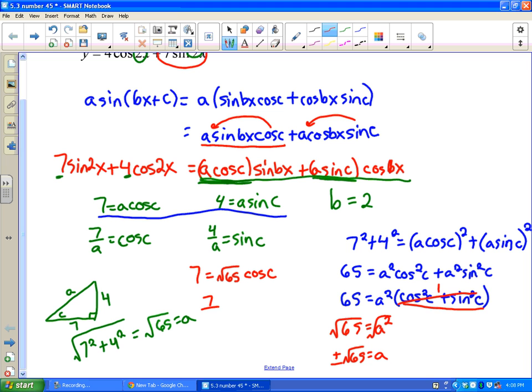How do I solve this for c? Well, let's divide by the square root of 65. And then we're going to take the inverse cosine of each side to get rid of the cosine on the right side. So the inverse cosine of 7 over square root of 65 equals c, because I was solving for c.